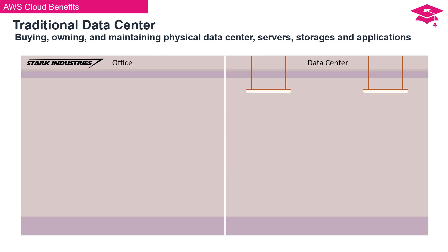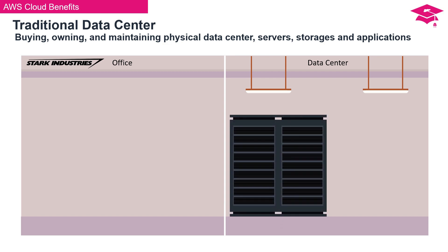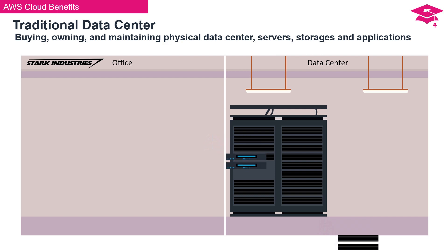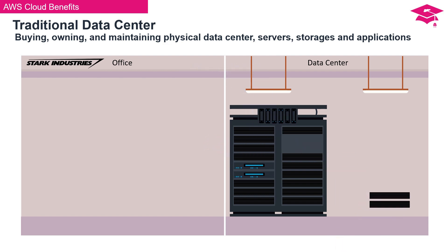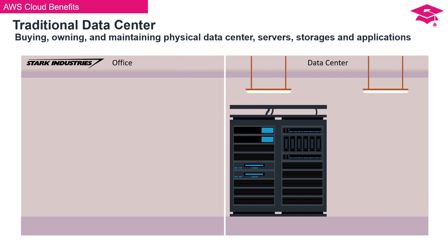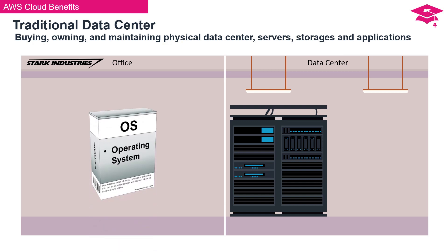In the traditional approach, the first step involves constructing a dedicated physical data center. Following that, you acquire data center racks and install cable trunks to establish connections. You've forecasted a need for two servers to run these applications, plus storage units for data. Data center networking components connect servers and storage hardware. Finally, an uninterruptible power supply (UPS) provides backup in case of a power outage. After setting up hardware, the next step involves installing the operating system before proceeding with application installation.